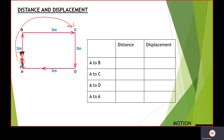For A to C in a clockwise direction, the distance is AB plus BC, which is 8 meters. For the displacement, the initial position is A and the final position is C. Connecting these two points with a straight line gives a right-angle triangle, right-angled at B. Using the Pythagorean theorem: AC² = AB² + BC², which gives us the square root of 34, approximately 5.83 meters.